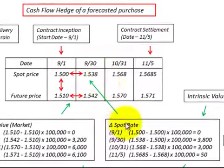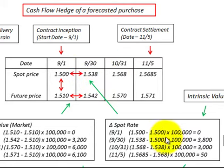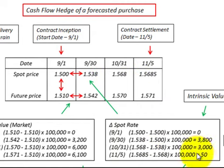To determine the change in spot rate, we look at the change between each period. For the 9-30 period, comparing to 9-1 and multiplying by the quantity under contract, we have a $3,800 change in the spot rate. For the 10-31 period, comparing to the preceding 9-30 period, we add a $3,000 change in spot rate. And for the last period of 11-5, comparing to 10-31, we add a $50 change in spot rate.